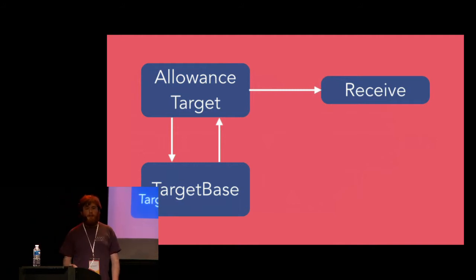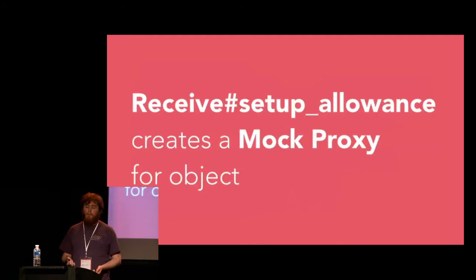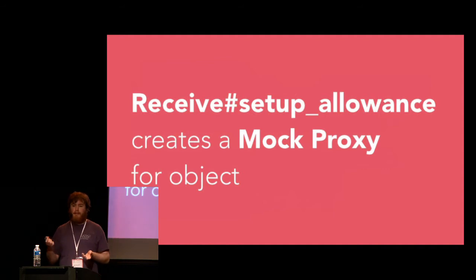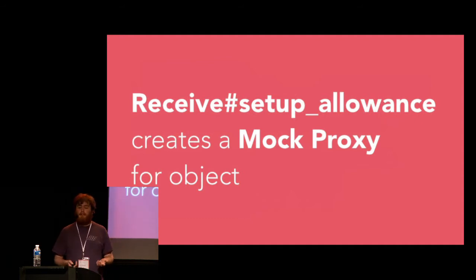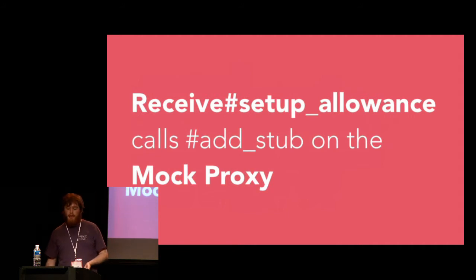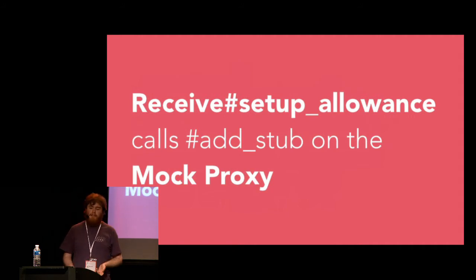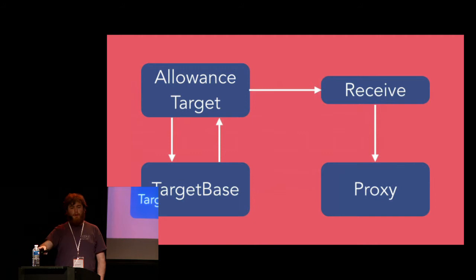Receive is our most commonly used mocking and stubbing matcher. What the AllowanceTarget to method will do with the passed receive matcher is call SetupAllowance on it. From that point onwards, the receive matcher does all of the heavy lifting to actually set up the mock expectation. The first thing the receive matcher does when it receives the call to SetupAllowance is it creates what's called a mock proxy for the object that is going to have the stub placed on it.